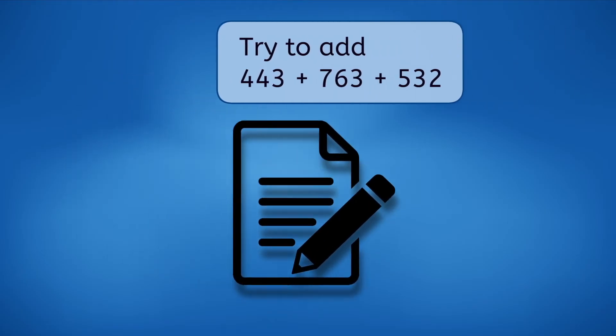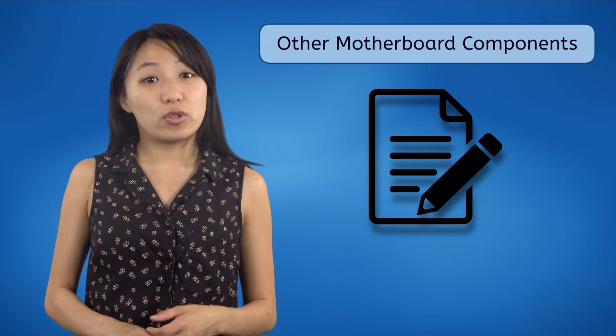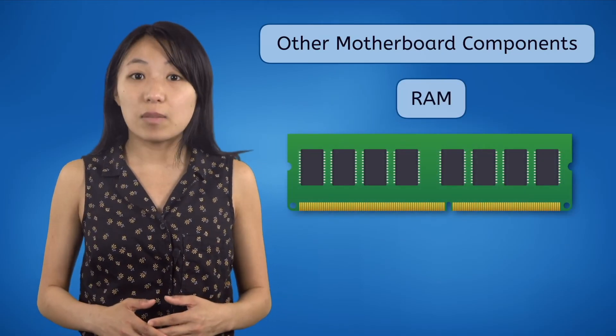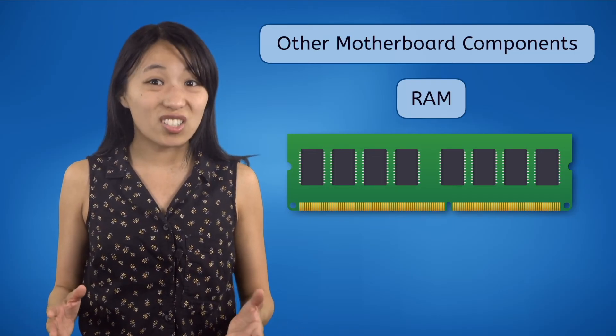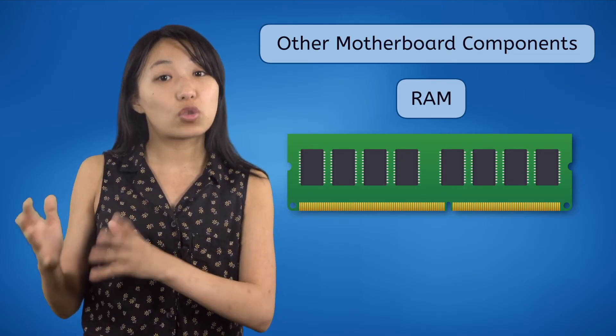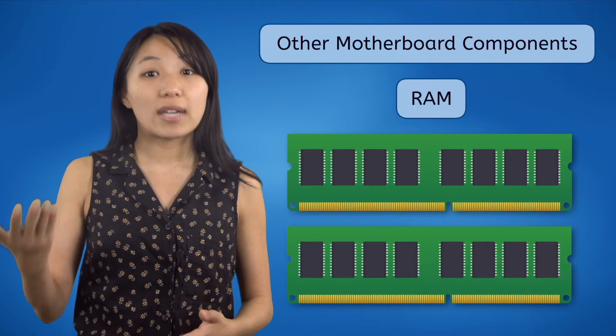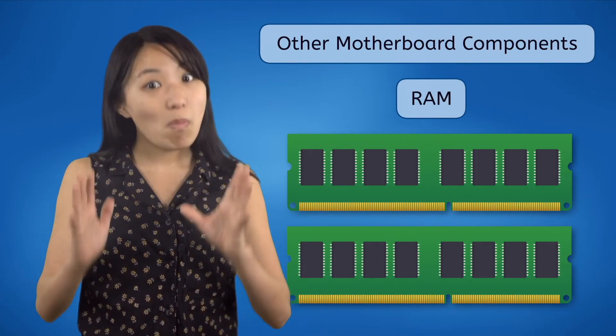Now do the same thing, but this time use a paper and pencil. The correct answer doesn't matter — what matters is how difficult each experience was. Did you keep forgetting things while you tried to do it in your head? Was it easier the second time because you didn't have to remember everything since it was all written on paper? That pencil and paper is like a computer's RAM. The CPU stores calculation data in the RAM — its short-term memory — until it needs it again. People upgrade their computer's RAM because more RAM means the computer can remember more calculations at once, and that means a much faster computer.